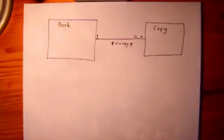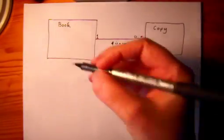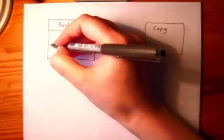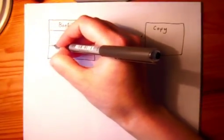Now let's put some attributes and operations onto our book class. We do this by splitting the rectangle into compartments.